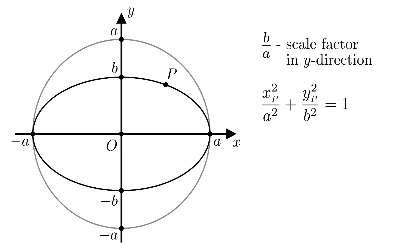This is true not only for this particular point P, but for every point on the ellipse. So, the equation of the ellipse is x squared over a squared plus y squared over b squared is equal to 1.